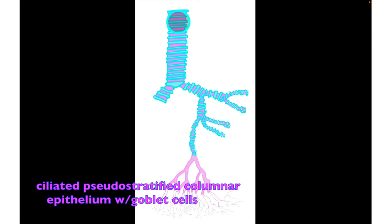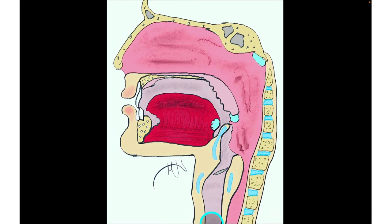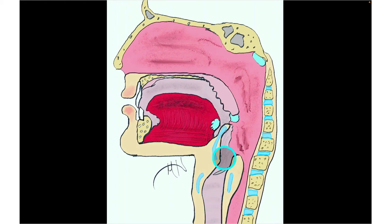The trachea is lined with ciliated pseudostratified columnar epithelial tissue. The esophagus starts at about the level of the cricoid cartilage. Anything propelled out of the trachea is swept superiorly into the esophagus, and this is related to a concept known as the mucociliary escalator.